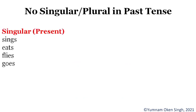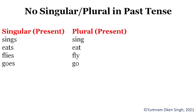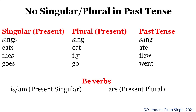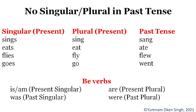Now let's come to past tense. There is no singular or plural distinction in the past tense. In present tense, singular forms are 'sings,' 'flies,' 'goes' — ending with 's' or 'es' — and plural forms are 'sing,' 'fly,' 'go.' But in past form we have only one form; we do not have separate singular or plural past forms. However, there are exceptions: the verb 'be' — in present tense singular is 'is' or 'am' and plural is 'are,' but in past tense singular is 'was' and plural is 'were.'